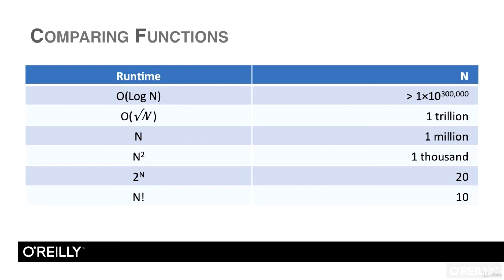Believe it or not, the order 2 to the n algorithm can only handle 20 inputs within one second, and the order n factorial algorithm can handle only between 9 and 10 inputs, because 9 factorial is around 300,000 and 10 factorial is more than 3 million. These algorithms are so slow that they'll only work for very small problems.